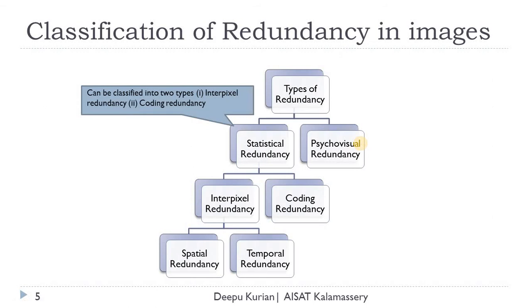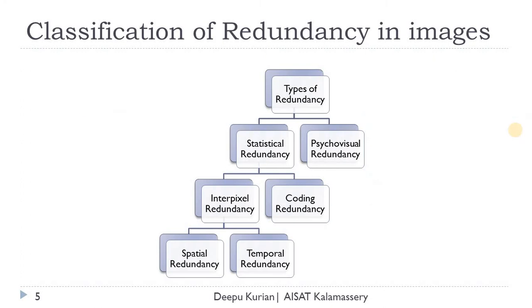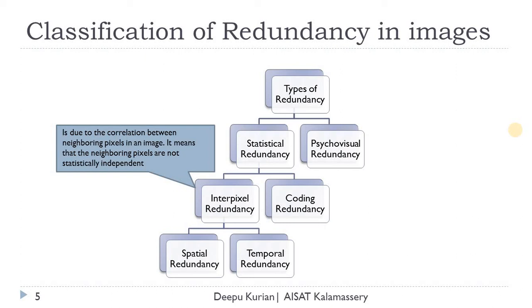Another type is statistical redundancy, which arises from representing images using data. It is of two types: interpixel redundancy and coding redundancy. Coding redundancy is associated with the representation of information — we represent information using binary codes for digital images, and the redundancy with this coding scheme is called coding redundancy. Interpixel redundancy is due to the correlation between neighboring pixels in the image. If the neighboring pixels are not statistically independent, there will be interpixel redundancy.